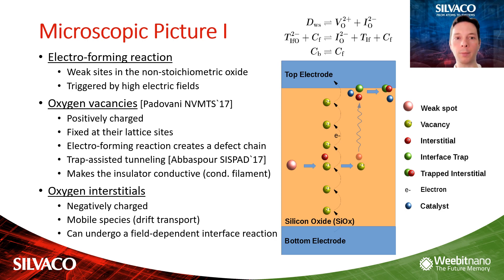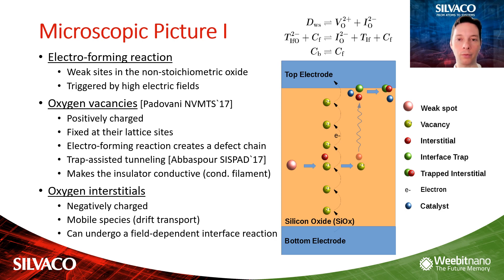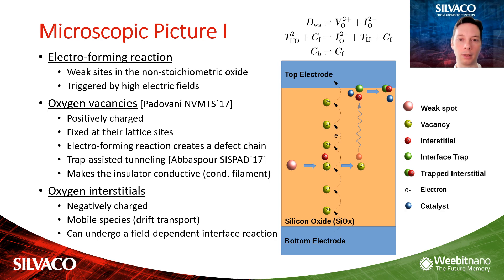During the electroforming reaction, weak bonds decay into oxygen vacancies and oxygen interstitials, where both are doubly charged. The oxygen vacancies can capture and emit electrons and remain fixed at the lattice sites. They are created by the electroforming reaction during the set phase, and if they build a chain of defects, this chain can carry a trap-to-trap tunneling current. This whole process corresponds to the formation of the conductive filament.